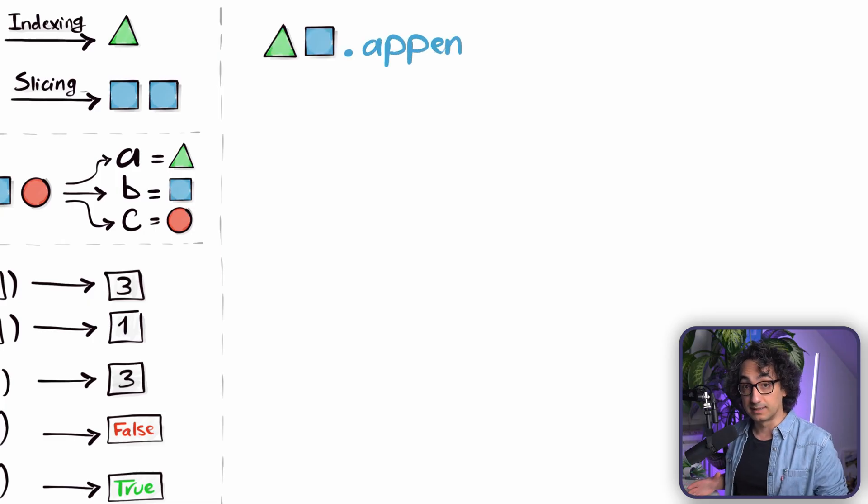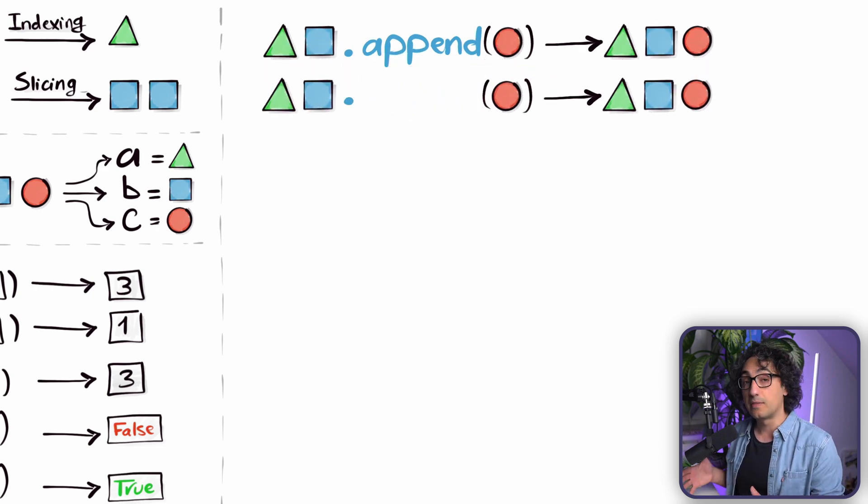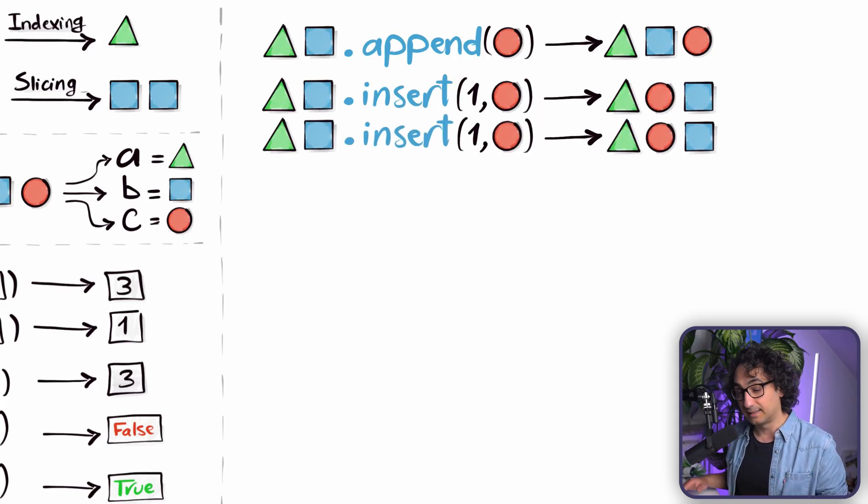And we can as well change our list. For example, we can use the method append in order to add an item to the end of our list, or you could use the method insert in order to put them exactly where you want by specifying the index.